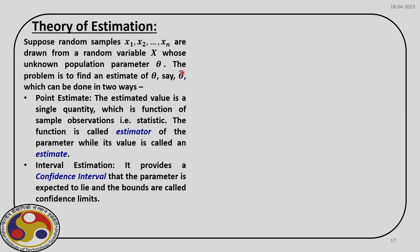There are two ways we can solve this problem. The first one is point estimate: we find out the sample values x1, x2 up to xn — the sample observations — and from them we try to find the estimate. The function that gives us this estimate is called an estimator. Apart from that, we also have interval estimation, which provides a confidence interval — that is, lower and upper bounds called confidence limits — within which the population parameter is expected to lie. All these estimates are derived from sample observations.